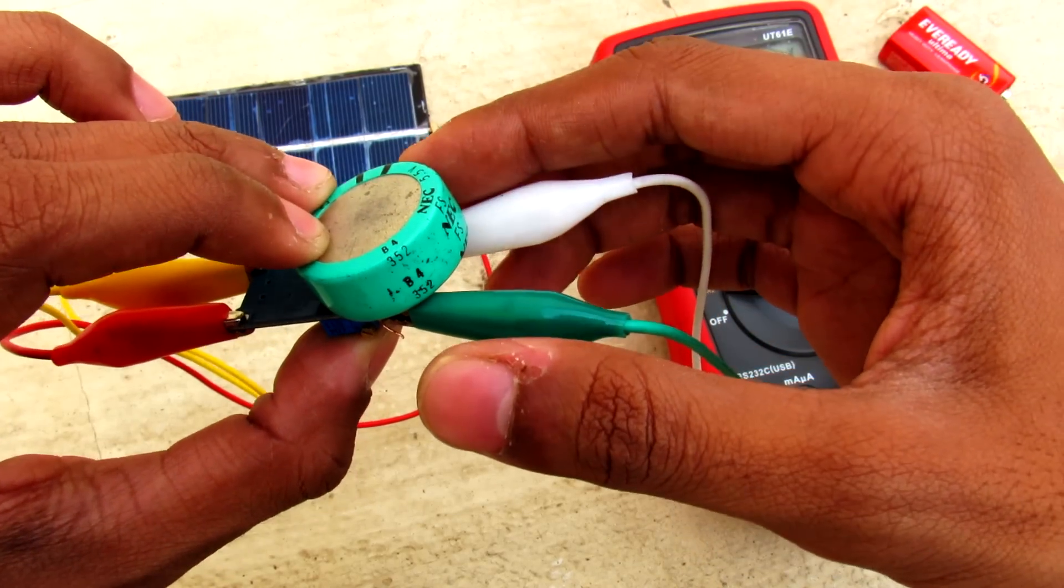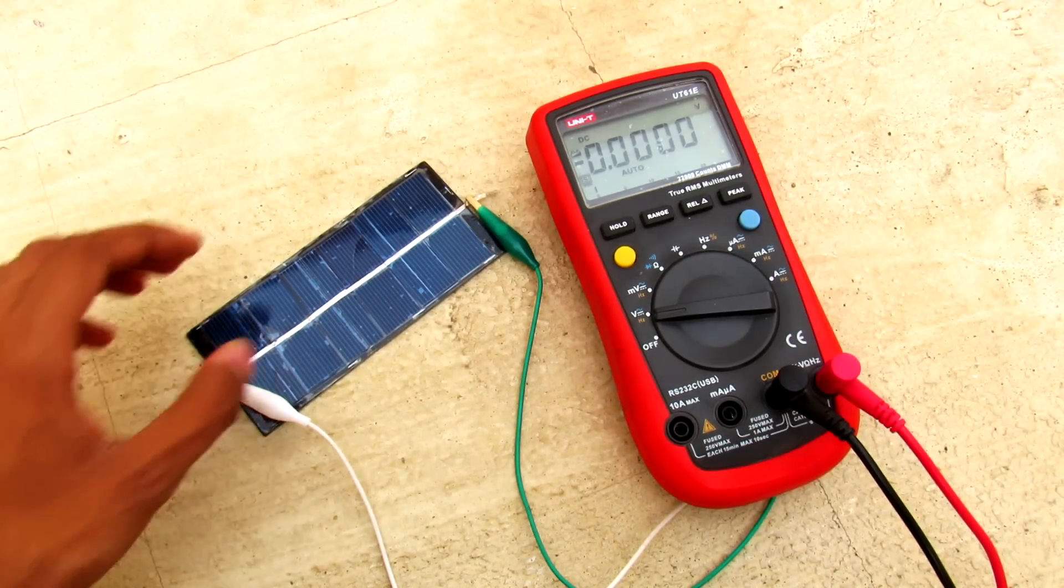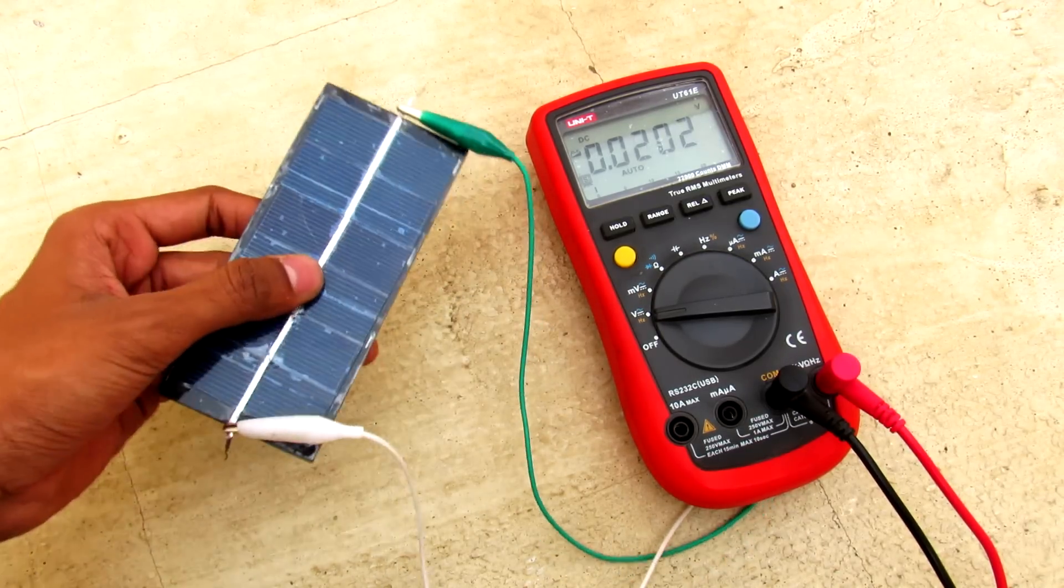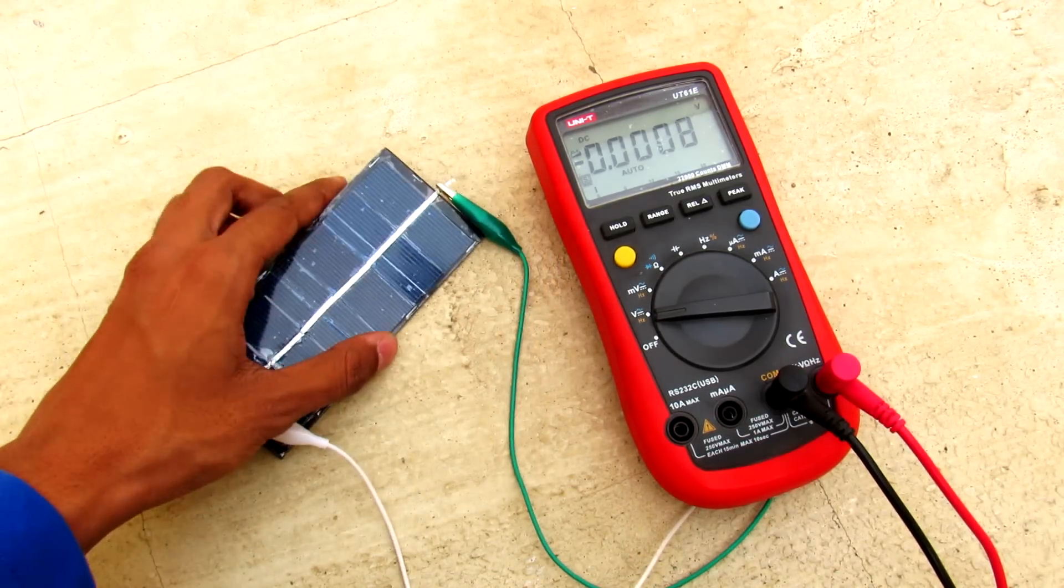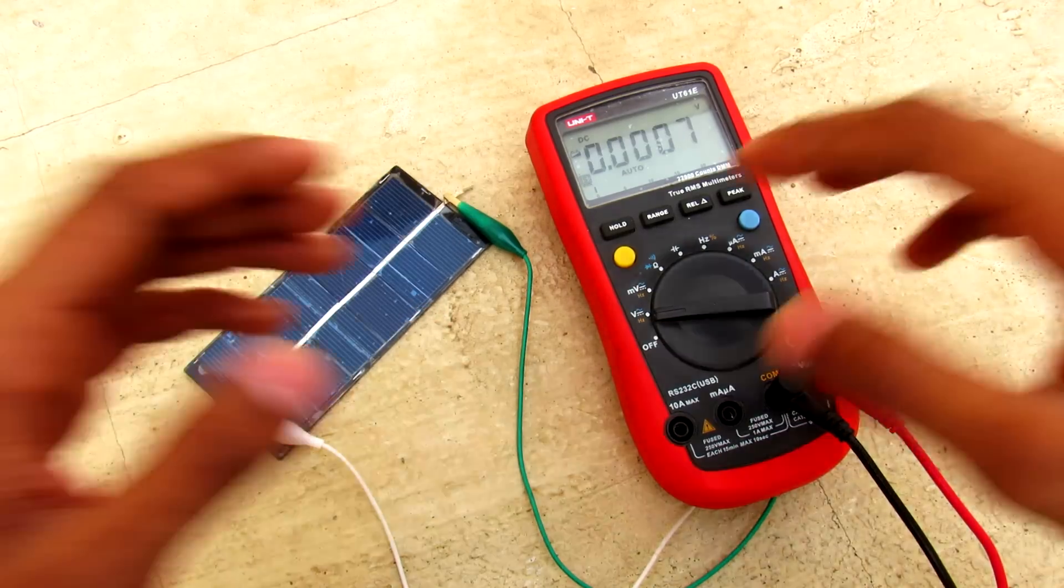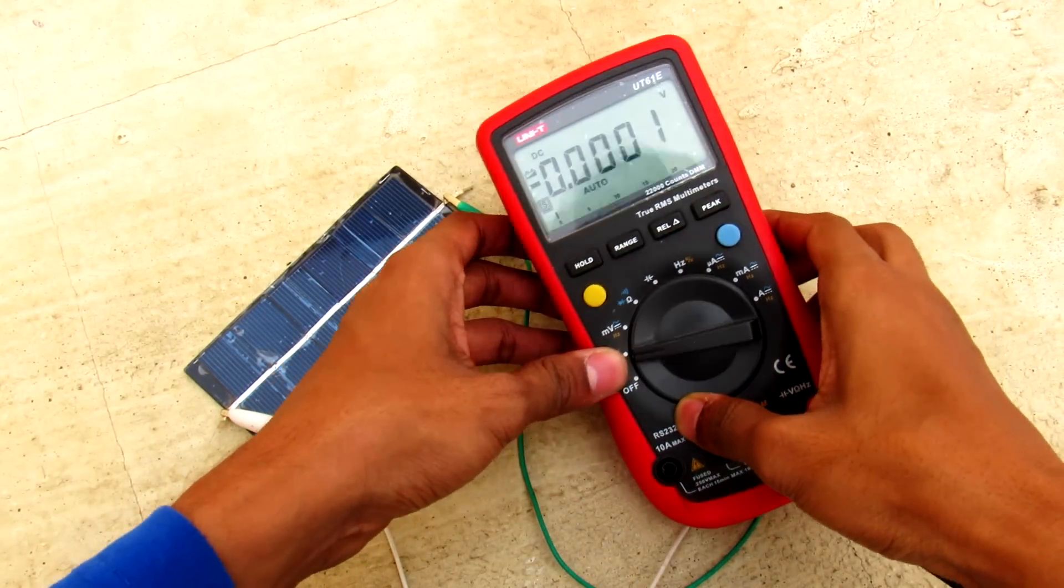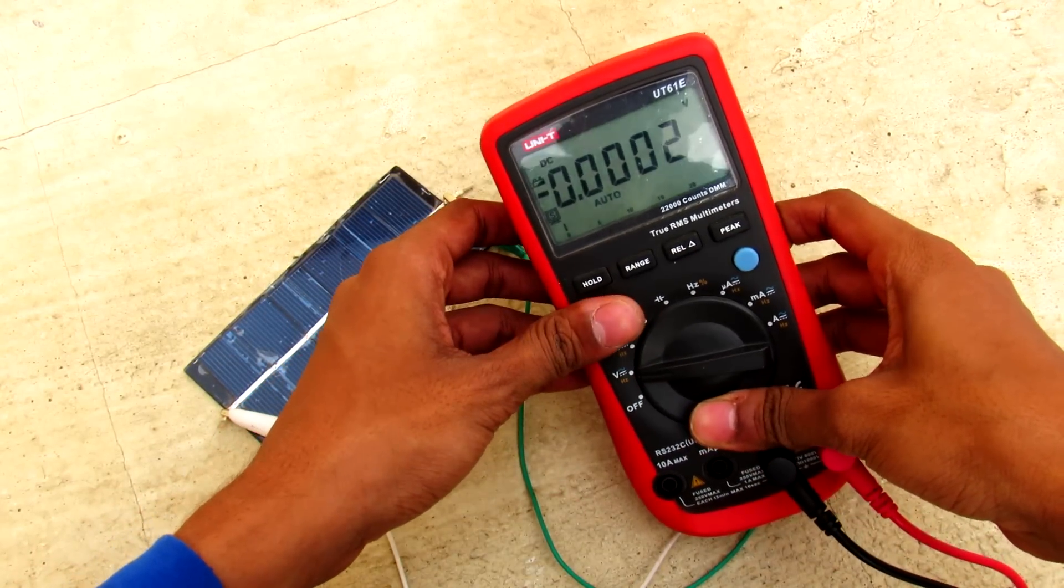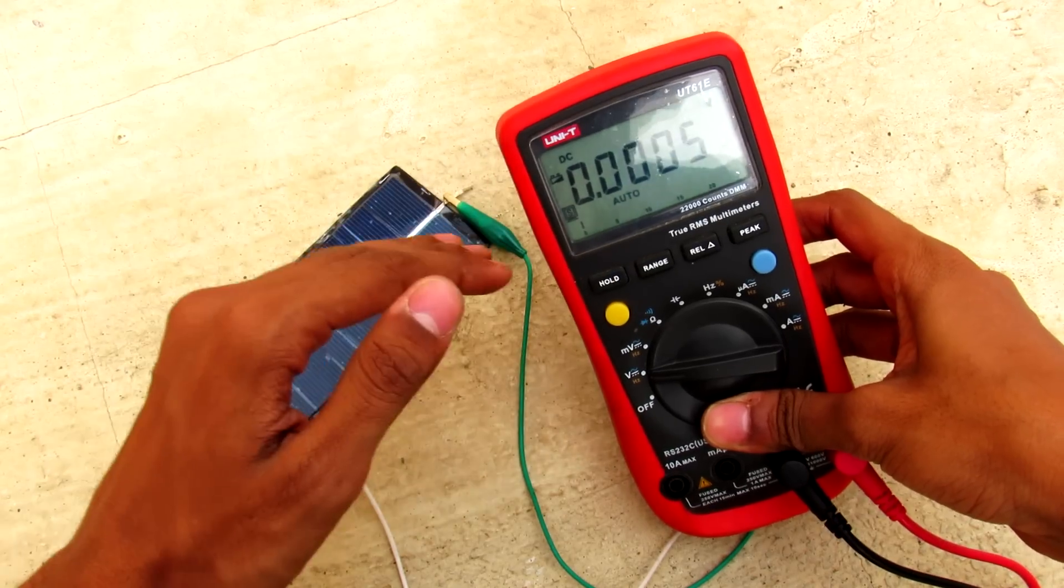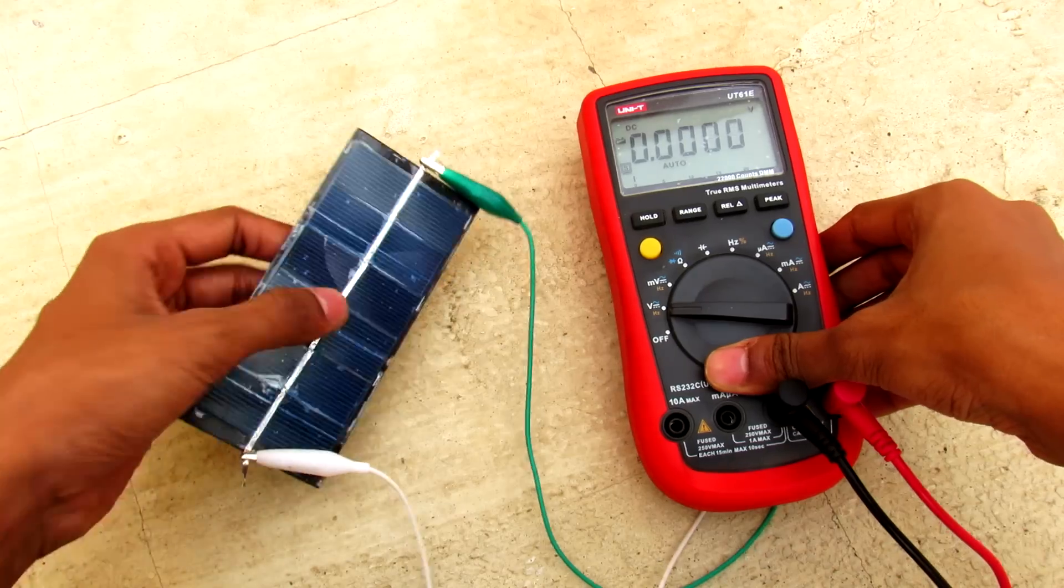As you can see, this multimeter is so low powered that it can directly run from the solar panel. When I measured the power consumption of this multimeter, I found it only consumes 5 milliamps at minimum voltage of 2 volts, so it can be directly powered from this solar panel.